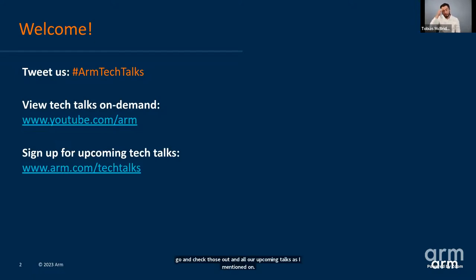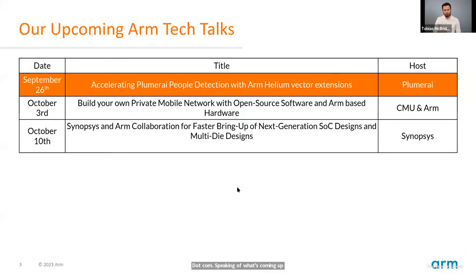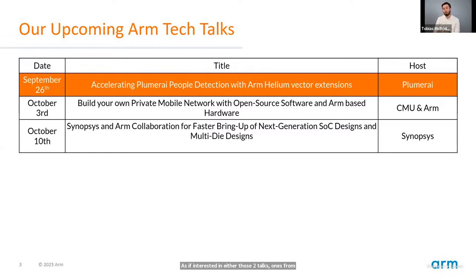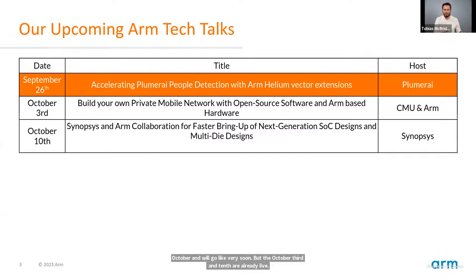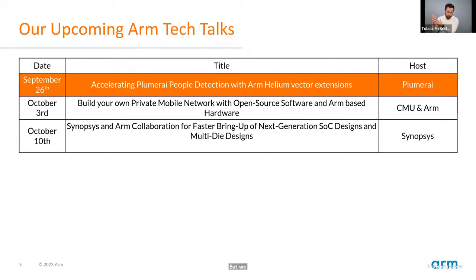We're going to shift gears from next week and start covering some really exciting infrastructure talks — one from Carnegie Mellon University and another from Synopsys. There's also another talk on October 17th along a similar infrastructure theme. The October 3rd and 10th talks are already live at arm.com/Tech Talks. Today we'll hear about how Plumeri are using Helium vector extensions to accelerate people detection.